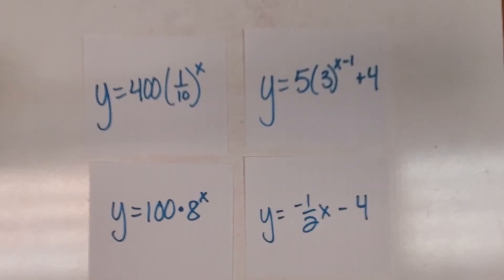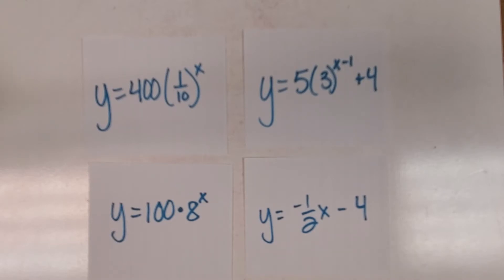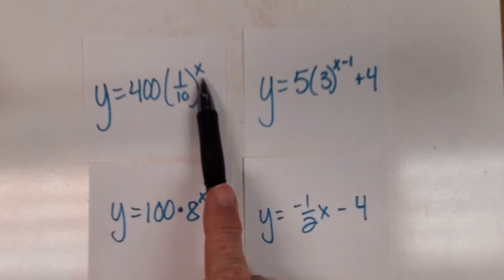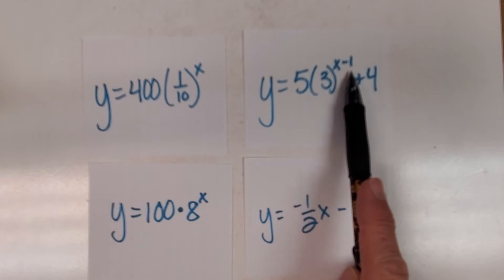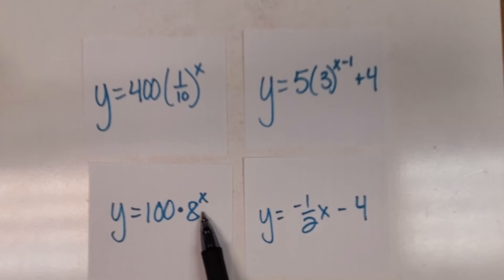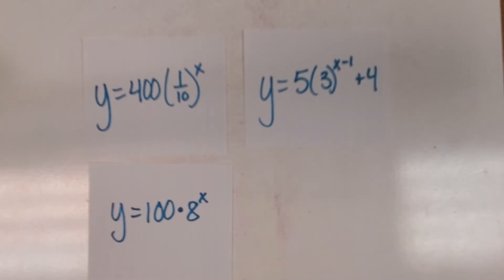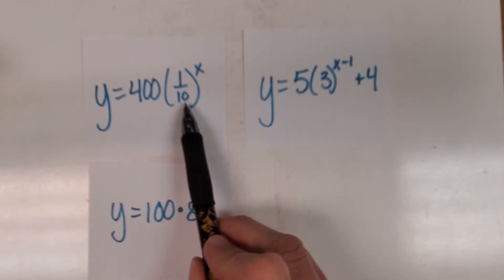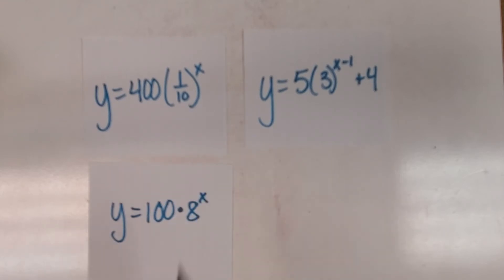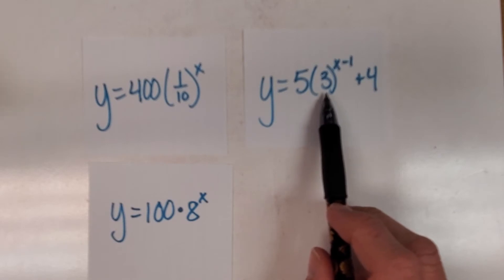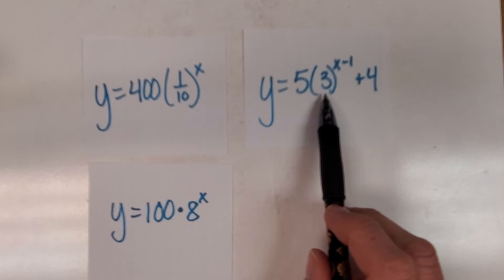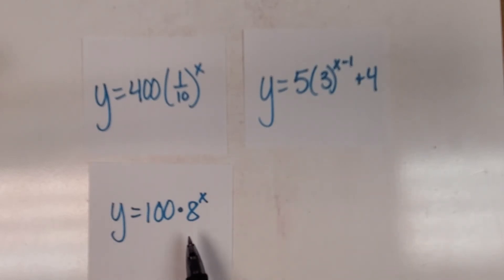Here are four functions — not all are exponential. I can tell an equation is exponential if it has x as an exponent. Looking at each one: yes, that has x as an exponent — exponential. That one too — exponential. This one as well — exponential. But this last one, x is not an exponent — that is a linear function, so we remove it. Of the remaining exponential ones, b equal to one tenth is between 0 and 1 — decay. B equal to 3 is bigger than 1 — growth. B equal to 8 is also bigger than 1 — growth.